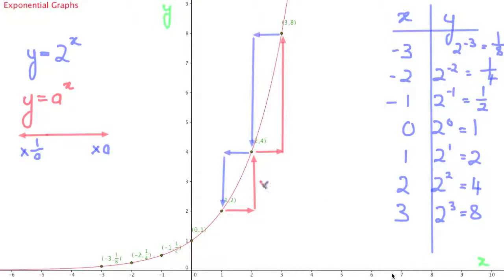Every step to the right we have multiplied the y values by 2 which is the value of a on this particular graph. And every step to the left we have divided by 2 which is the same as multiplying by a half.